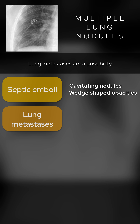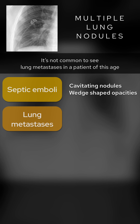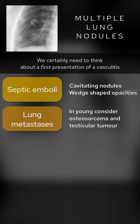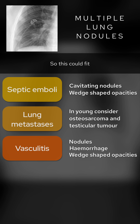Lung metastases are a possibility, although they wouldn't really account for the clinical picture. It's not common to see lung metastases in a patient of this age, but some tumors that affect people in their 20s, like testicular tumors and osteosarcoma, can metastasize to the lung. We certainly need to think about a first presentation of a vasculitis, namely granulomatous polyangitis, formerly known as Wegener's granulomatosis. We commonly see these patients present with hemoptysis, and on imaging can see nodules, as well as pulmonary hemorrhage and peripheral wedge-shaped opacities, so this could fit.